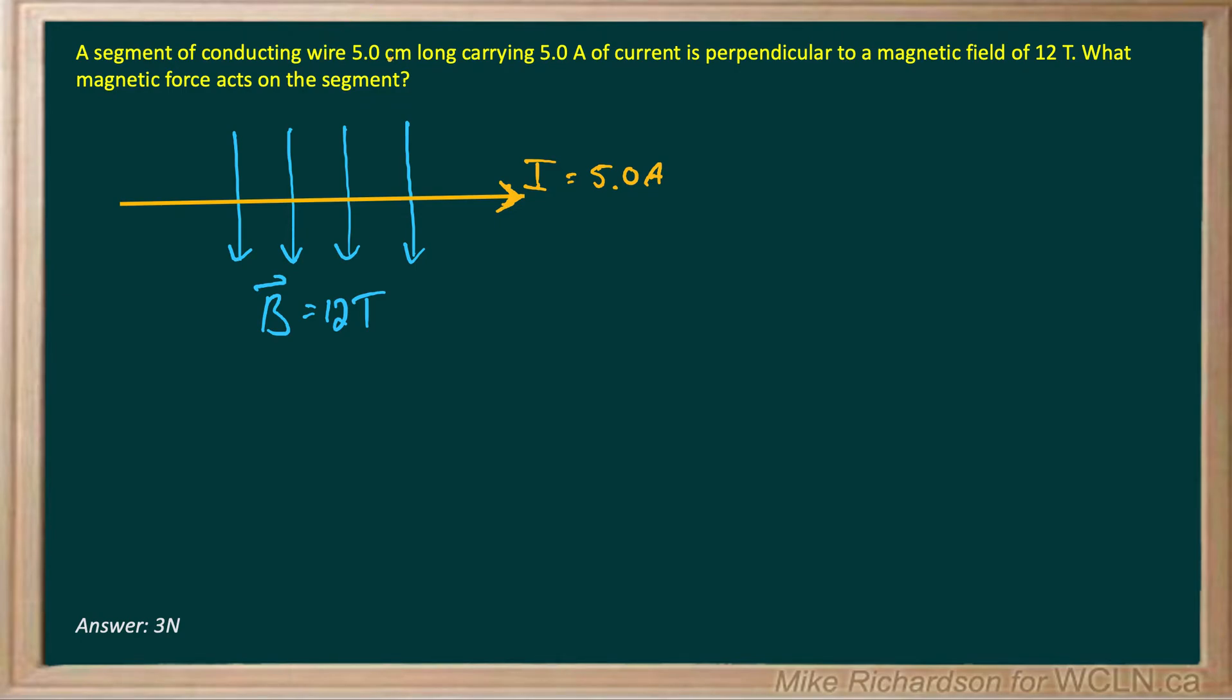A segment of conducting wire five centimeters long carrying a current of five amps is at right angles, perpendicular to a magnetic field of 12 Teslas. So I've just sketched it so we can roughly see something that fits that criteria. Here I've got my magnetic field, it's 90 degrees to my current carrying wire.